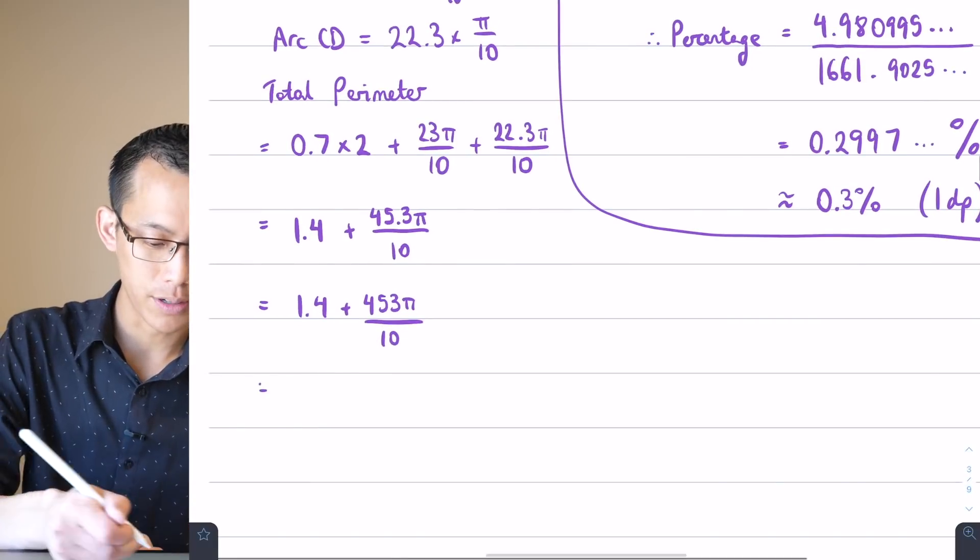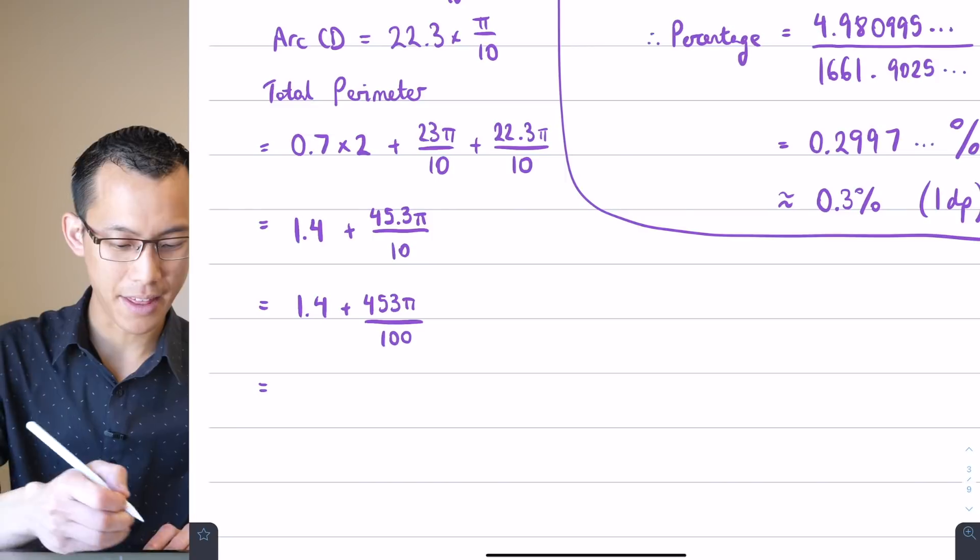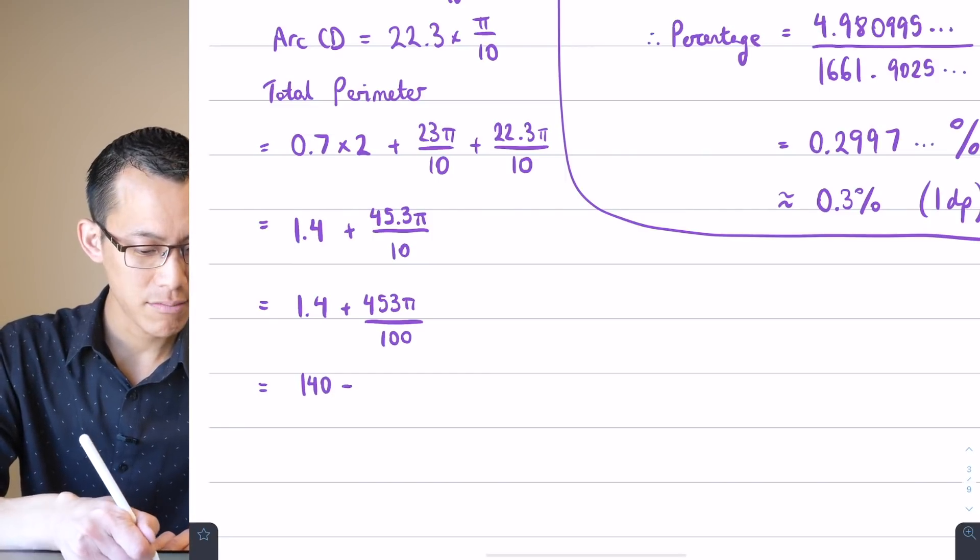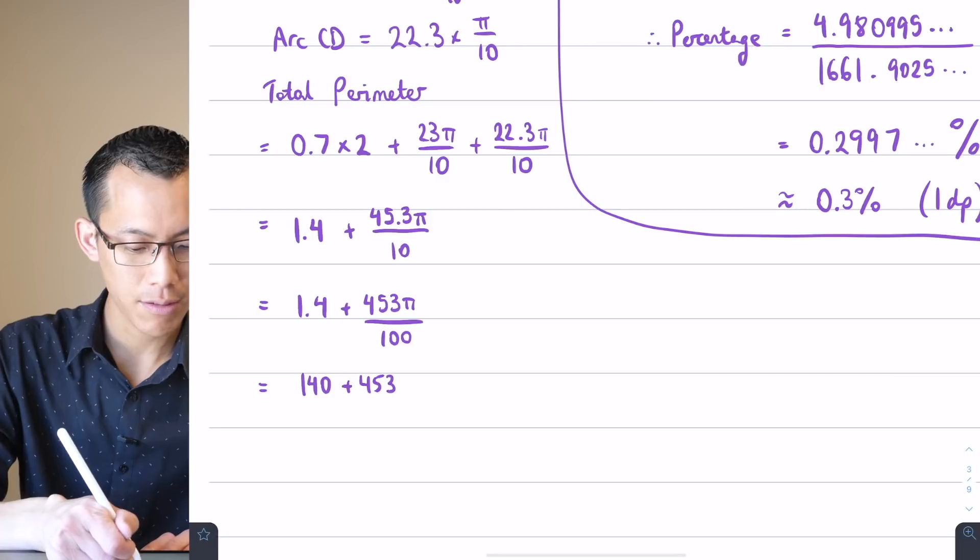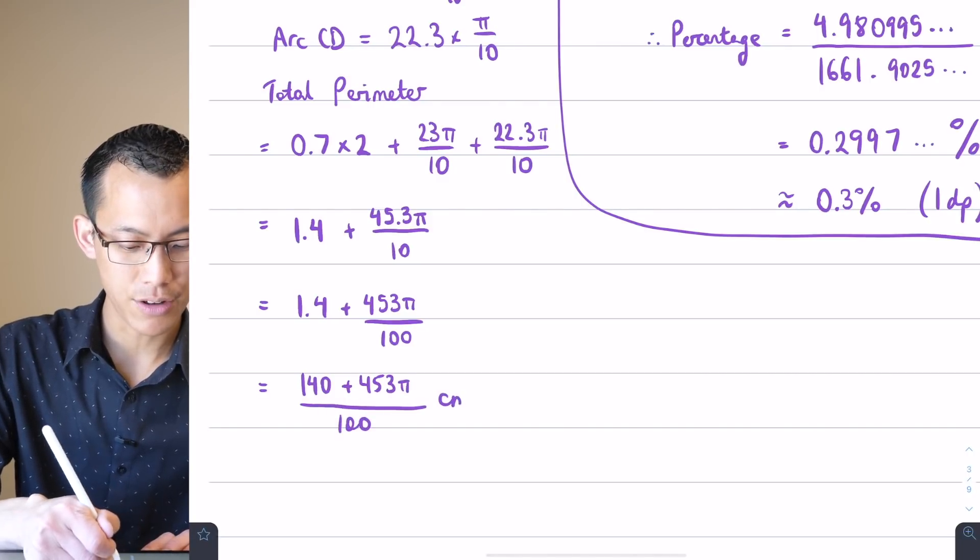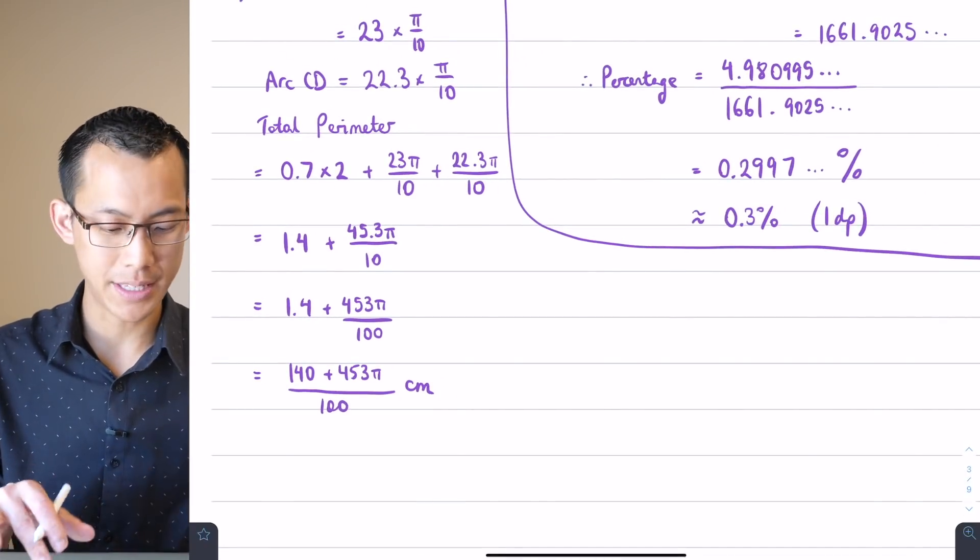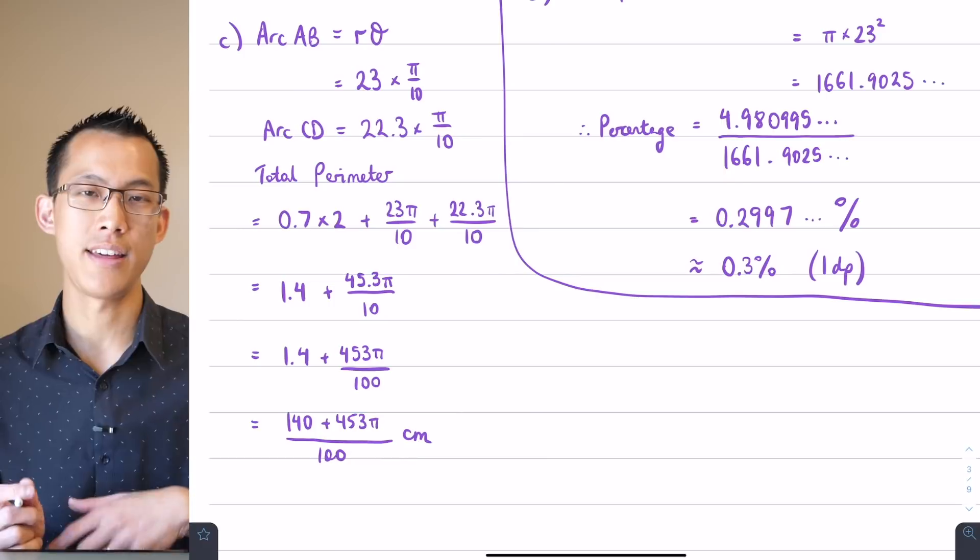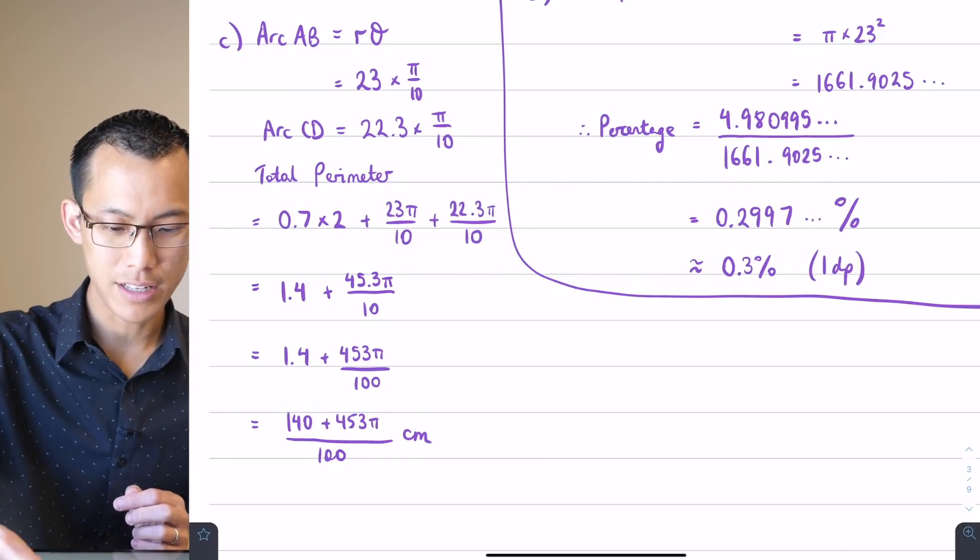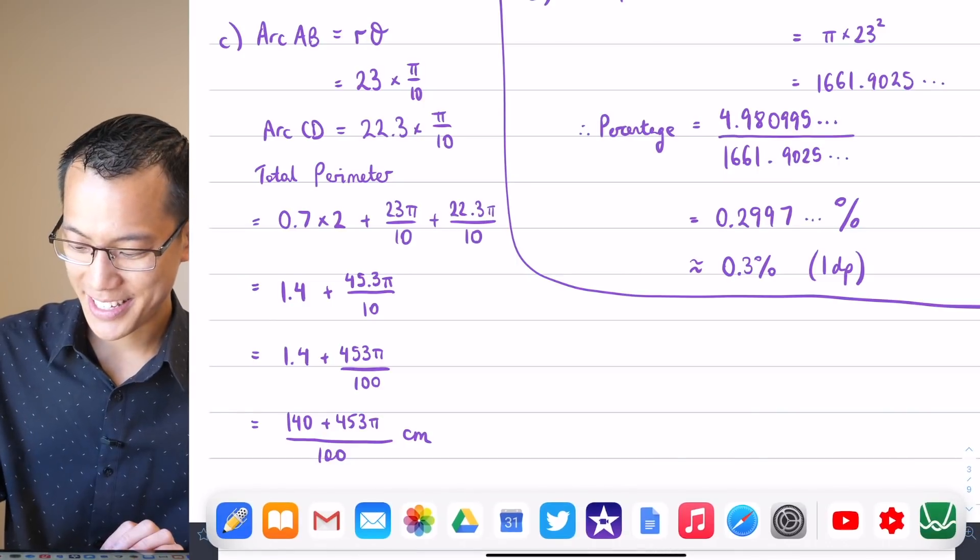And there is a small part of me that grates against having a decimal on top of a fraction. So therefore I'm going to write this as 1.4 plus 453 pi all over 100. And our unit was in centimeters. Of course, if you want, you can do a quick sense check on that as well by putting it into a calculator, seeing if it is reasonable. I might as well, since I've just mentioned that we could do it, I might as well do it.